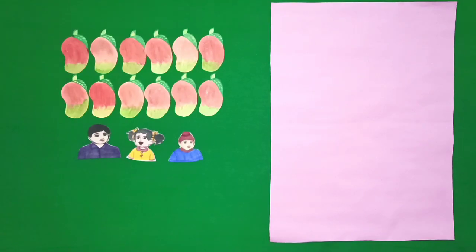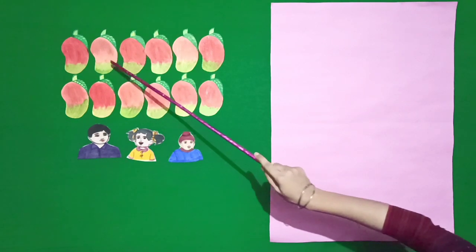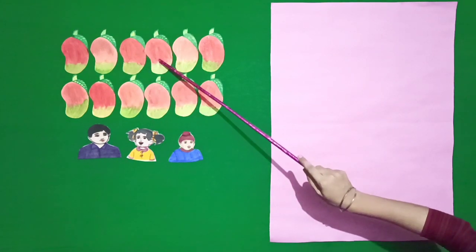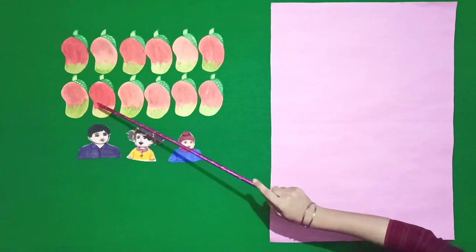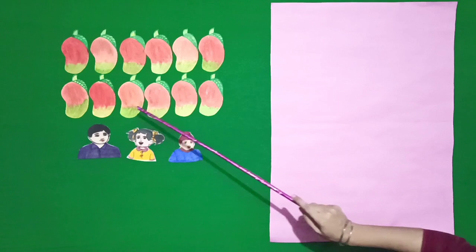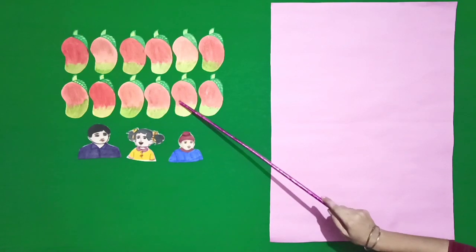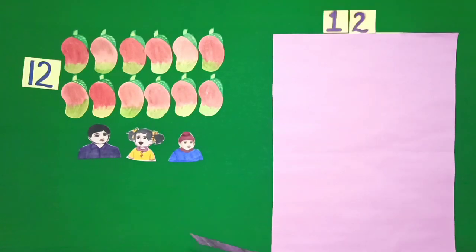Dear students, I have mangoes. Let's count how many mangoes are there. 1, 2, 3, 4, 5, 6, 7, 8, 9, 10, 11, 12. 12 mangoes.